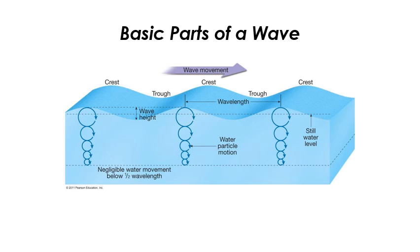The basic parts of a wave are shown in this diagram here. Waves get their energy from wind — wind blows across the surface of the water and transfers energy.